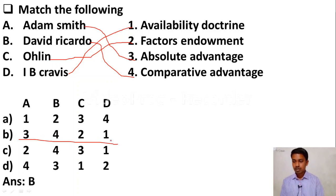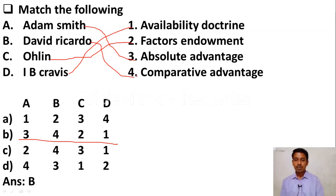To confirm: A — Adam Smith, Absolute Advantage. B — David Ricardo, Comparative Cost Advantage Theory. C — Ohlin, Factor Endowment. D — I.B. Kravitz, Availability Doctrine. Please remember these answers. Let us move to the next question.